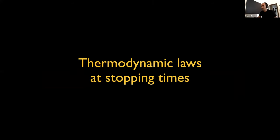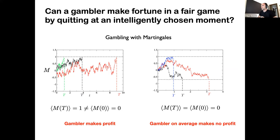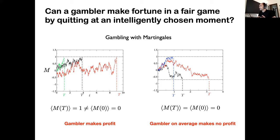We discovered there is a martingale in thermodynamics, and now I will take theorems from mathematics and apply them to this specific martingale. The first thing we can get is thermodynamic laws at stopping times. This comes back to gambling with martingales: can a gambler make a fortune in a fair game by quitting at an intelligently chosen moment? You say: I wait until the stock market is above a threshold and stop there. This works if you have infinite money, but if you have finite money you set a finite stopping rule — say, stop when you gain 100 euros or lose 5 euros.